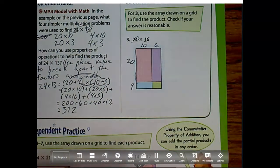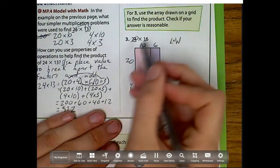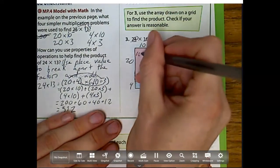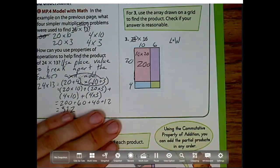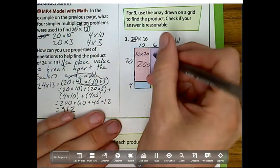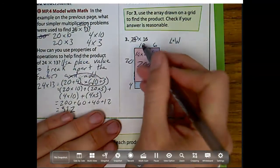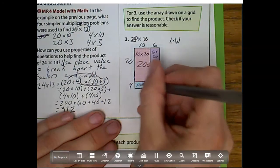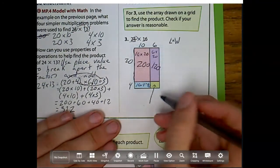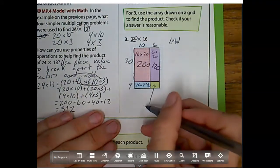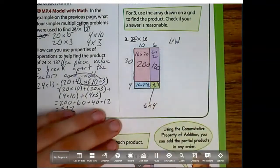So now we can either count up all of these dots, or remember, this is an area model where we do length times width. So I'm going to do my length 10 times 20, this is 200. Next, 20 times 6, or 6 times 20, is 120. 4 times 10 is 40. And this last one I'm not going to be able to fit, so I'm just going to draw an area right here, that is 6 times 4, which is equal to 24.